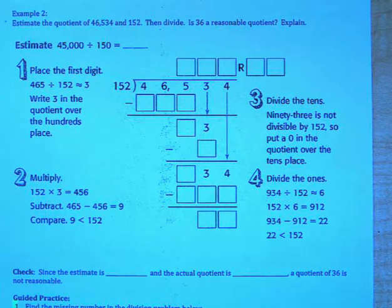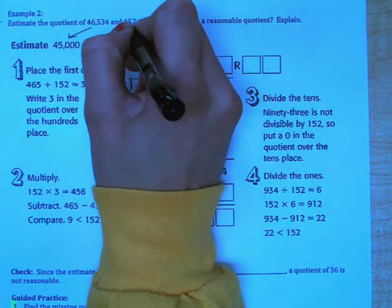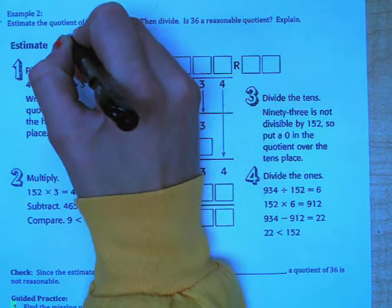Example 2 says estimate the quotient of 46,534 and 152. Then divide. Is 36 a reasonable quotient? Explain. So we're going to estimate 45,000 divided by 150. We got that by rounding each number to get compatible numbers.